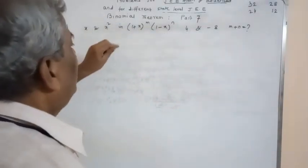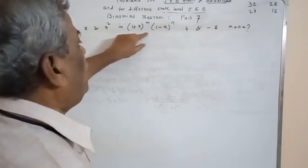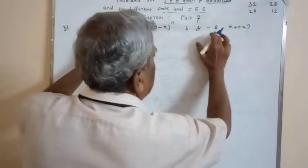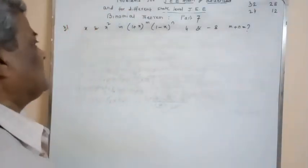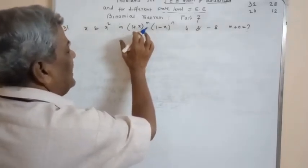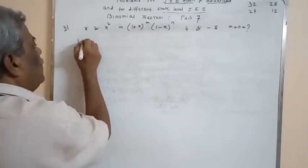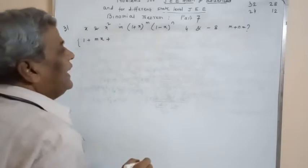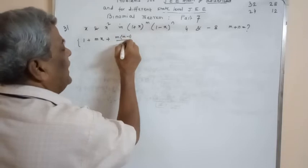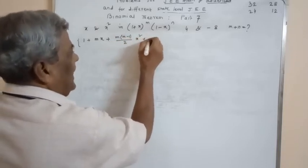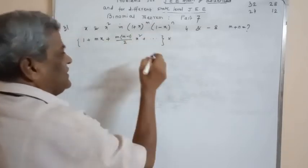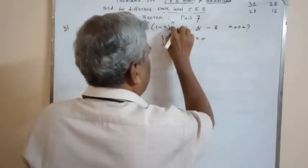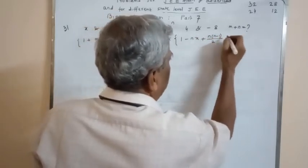This problem involves a product of two binomials. In that expansion, the coefficient of x is 4 and the coefficient of x² is -8. Then we find m+n. Expanding both binomials, we get (1 + mx + m(m-1)/2 · x² + ...) multiplied by (1 - nx + nC2·x² + ...).